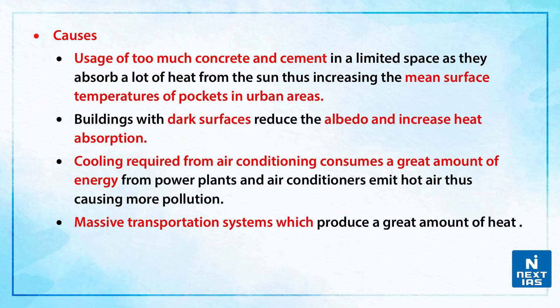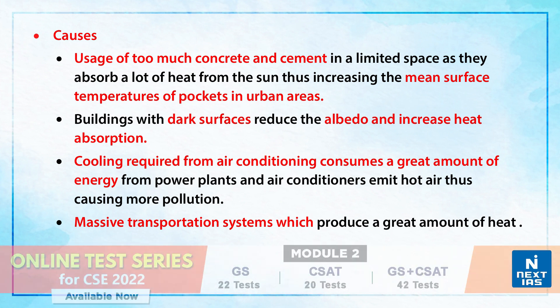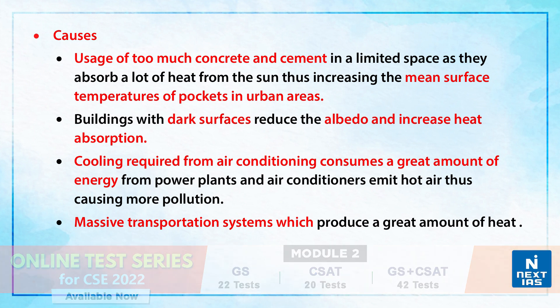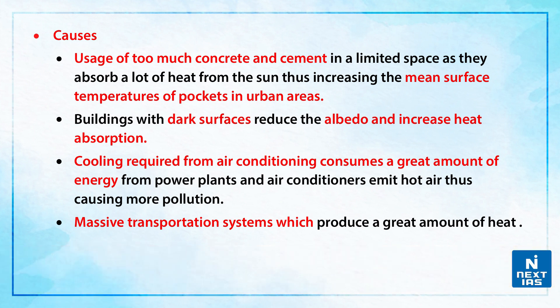Now, what is an albedo? Albedo is an expression of the ability of a surface to reflect sunlight, or we can say heat from the sun. For example, light-coloured surfaces return a large part of the sun rays back to the atmosphere — therefore we call it a high albedo — whereas dark surfaces absorb the rays from the sun, and we call it a low albedo. Therefore, buildings with dark surfaces increase the heat absorption.